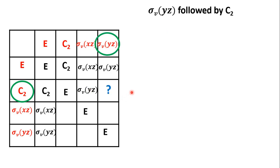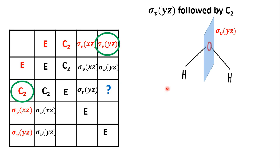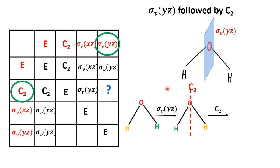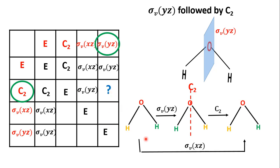σVyz followed by C2: σVyz is a plane through oxygen, perpendicular to the molecular plane. During reflection, the atoms are interchanged — yellow goes right, green goes left. Then during C2 rotation through 180 degrees, the atoms interchange again. This looks like the result is doing nothing, but E is already present in the row and column. So this is equivalent to σVxz — and σVyz followed by C2 equals σVxz.